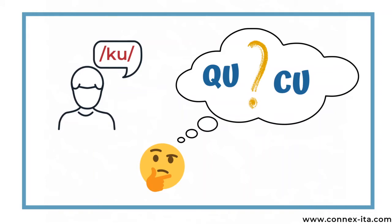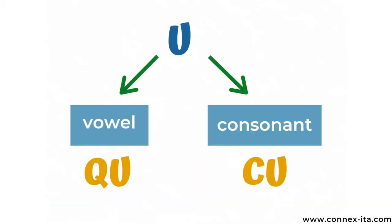So, if these two sounds are basically the same, how do you recognize them? Good news is there's a rule that tells you exactly when you write Q instead of C. It's pretty simple: if the vowel U is followed by another vowel, then you write Q. Whereas, in case the next letter is a consonant, then you write C.